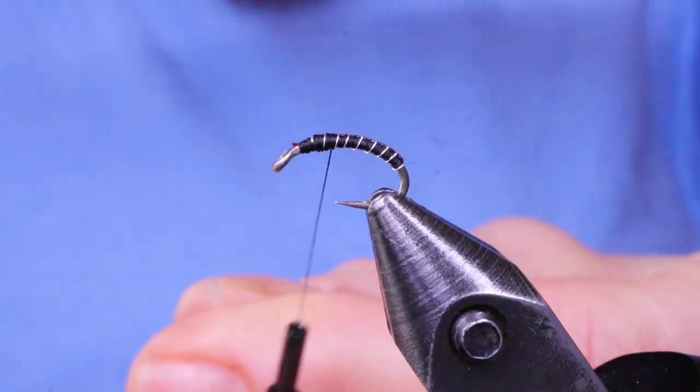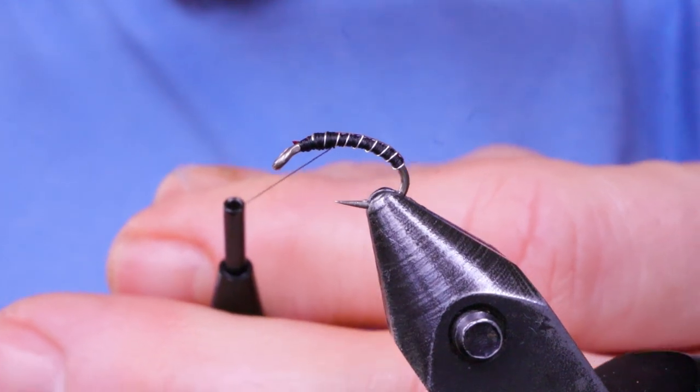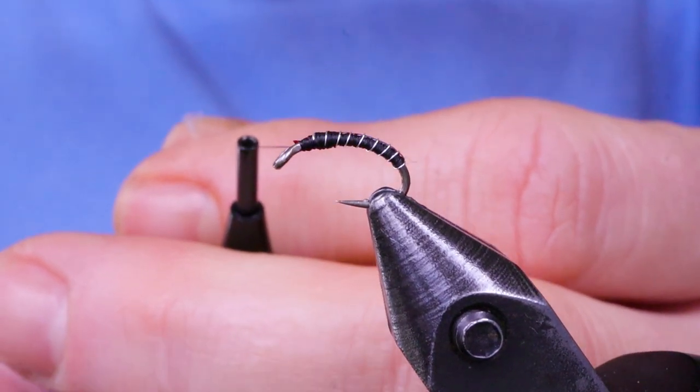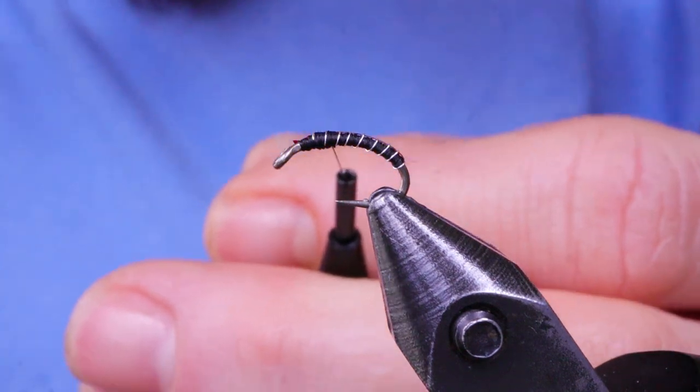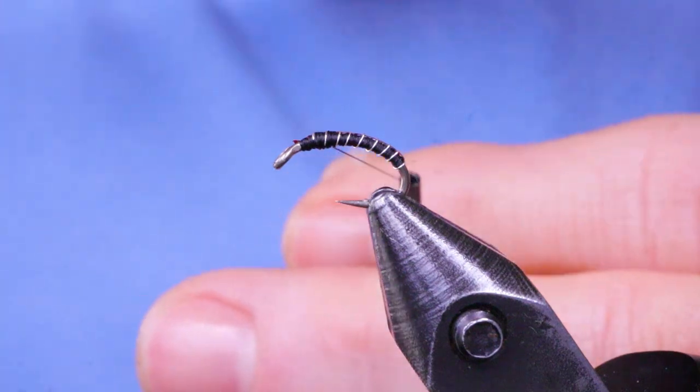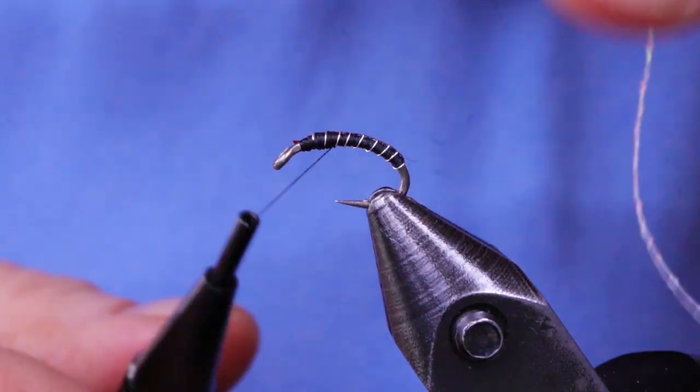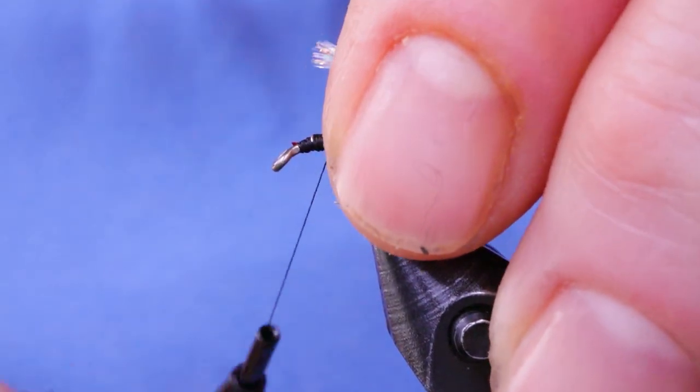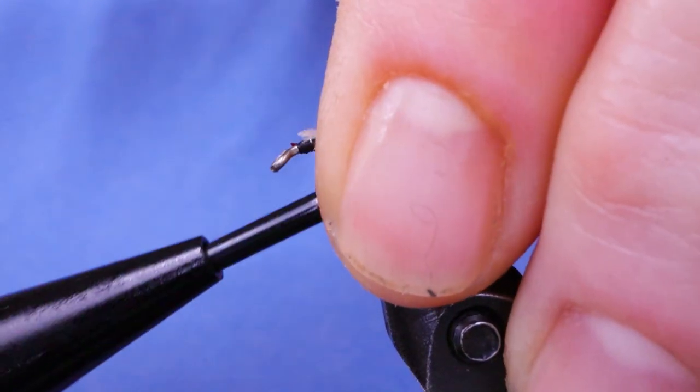I'm just going to tie these in on top. I'm just going to use a little bit of cobbler's wax on my thread. It's a slippery material. So it's good to use a tiny bit of wax even with wax thread.